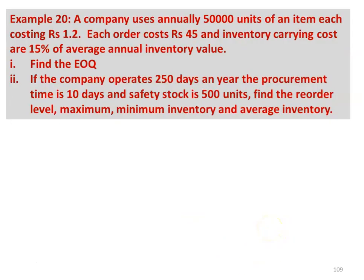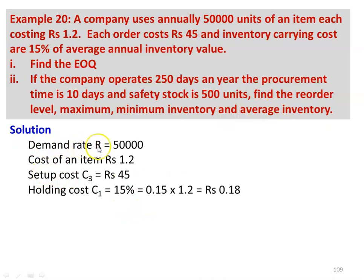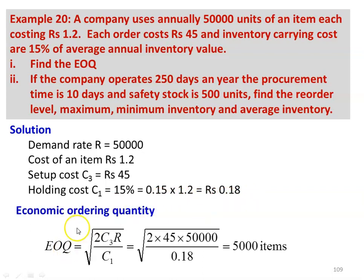Example 20: A company uses annually 50,000 units of an item, each costing rupees 1.2. Each order costs rupees 45 and the inventory carrying cost is 15% of the average annual inventory value. Find the economic ordering quantity. The company operates 250 days a year, procurement time is 10 days, and safety stock is 500 units. The holding cost C1 = 0.15 × 1.2 = rupees 0.18. EOQ = √(2 × C3 × R / C1) = √(2 × 45 × 50,000 / 0.18) = 5,000 items.